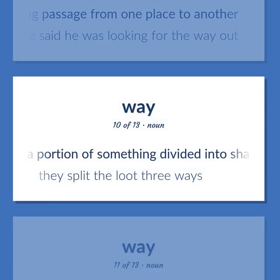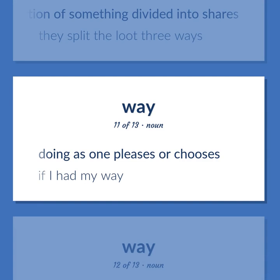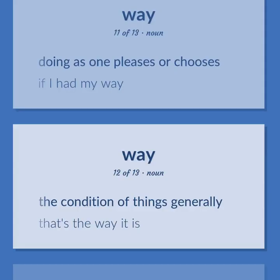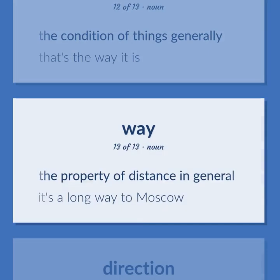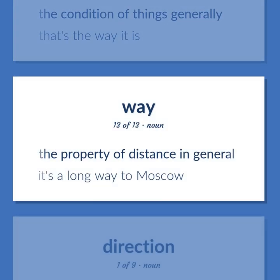A portion of something divided into shares. They split the loot three ways. Doing as one pleases or chooses. If I had my way. The condition of things generally. That's the way it is. The property of distance in general. It's a long way to Moscow.